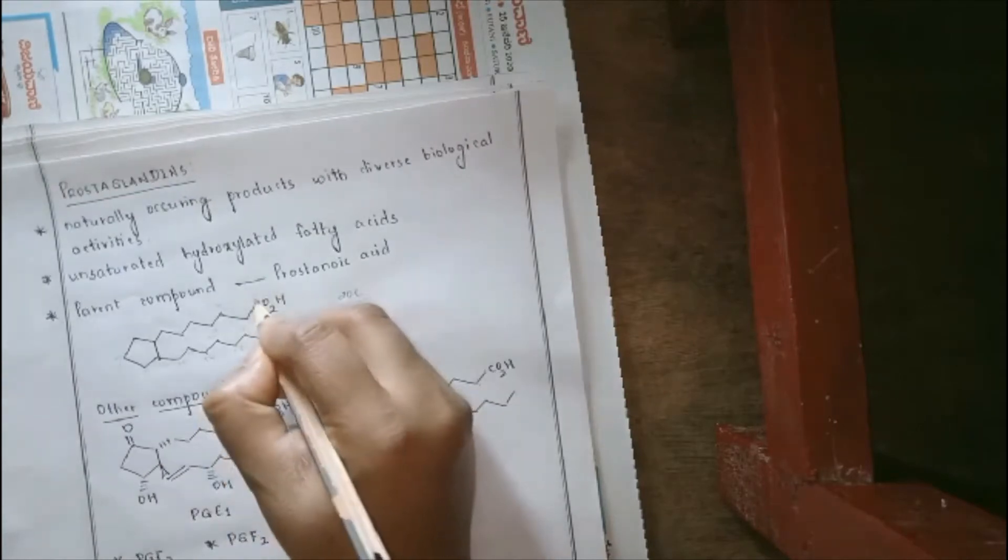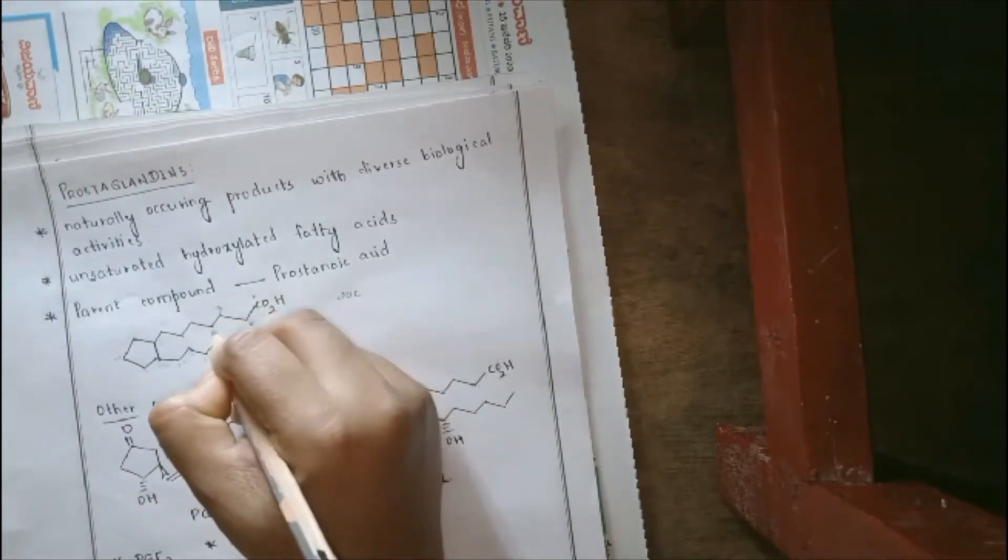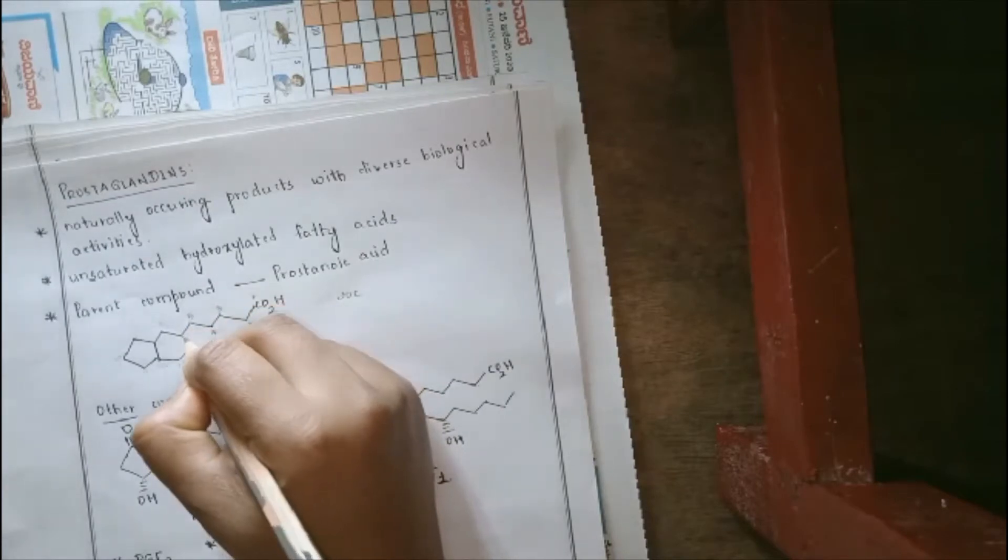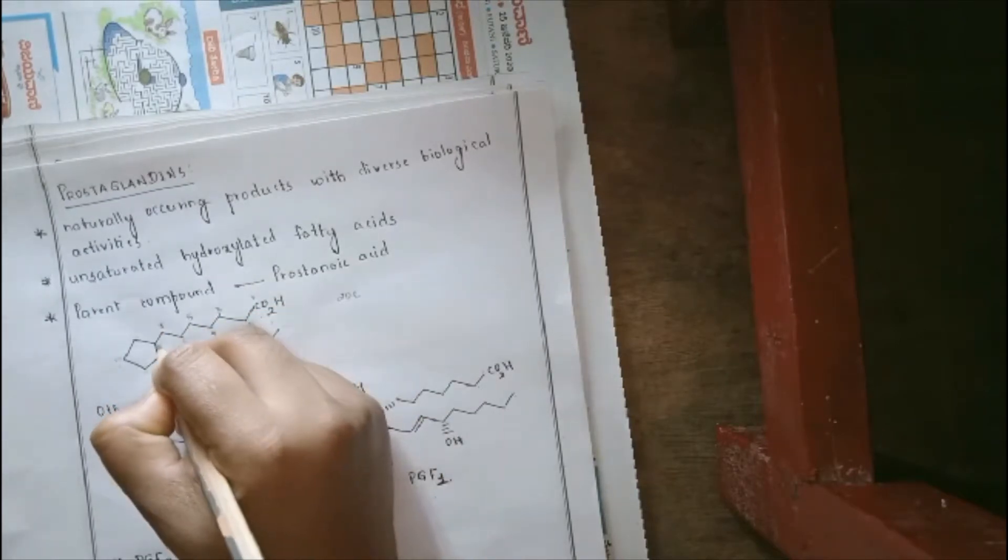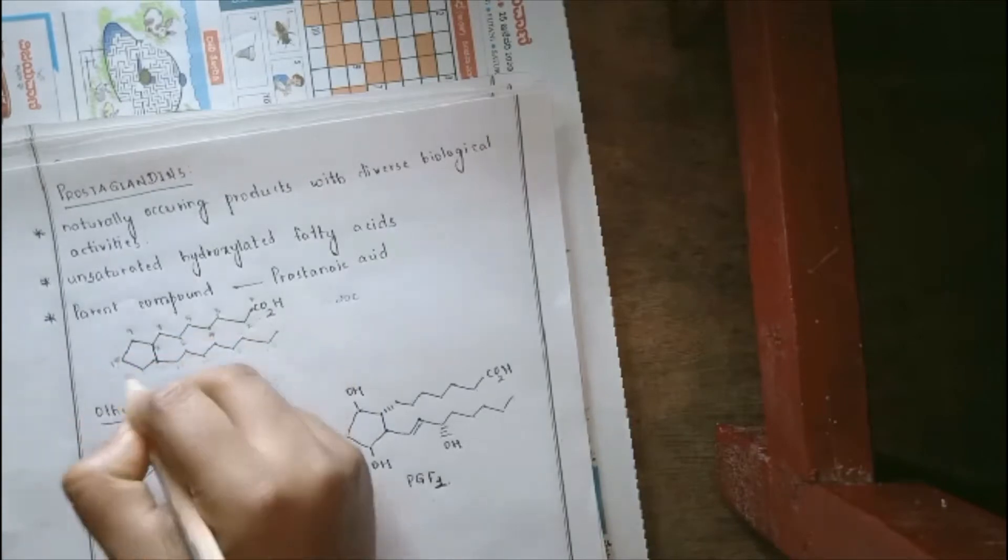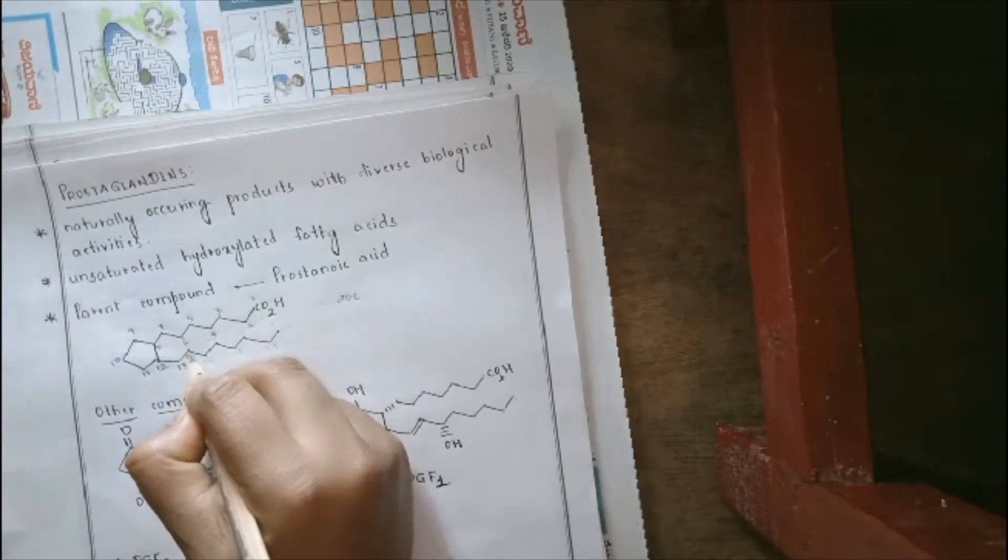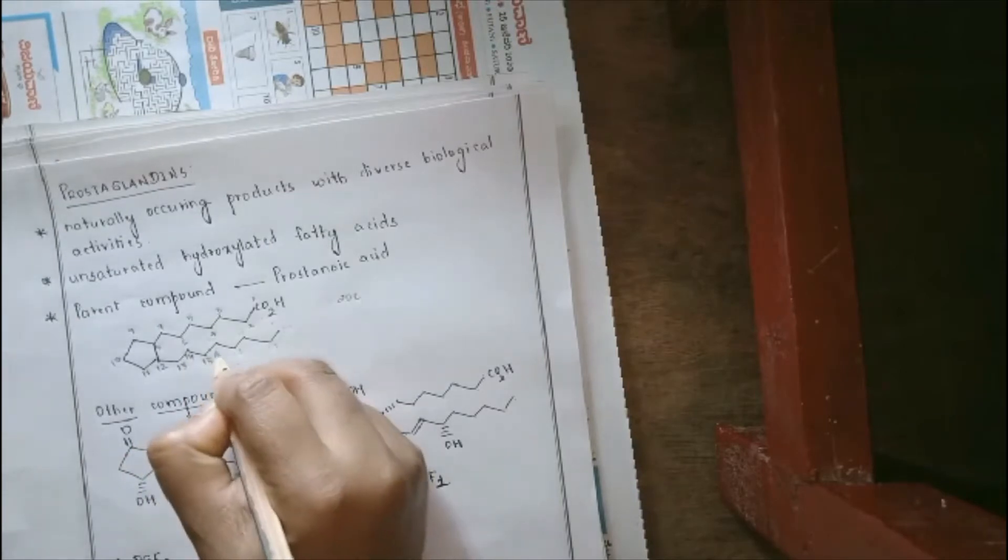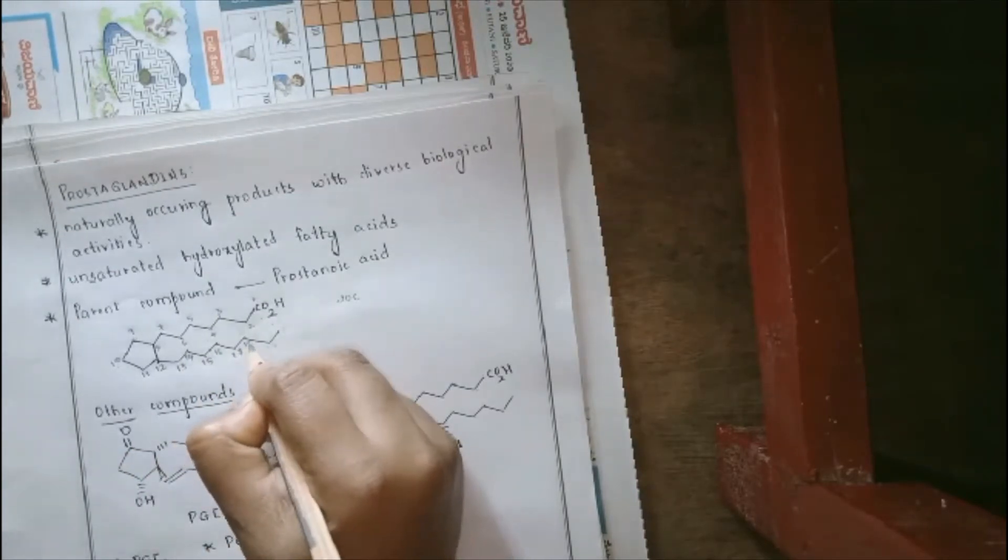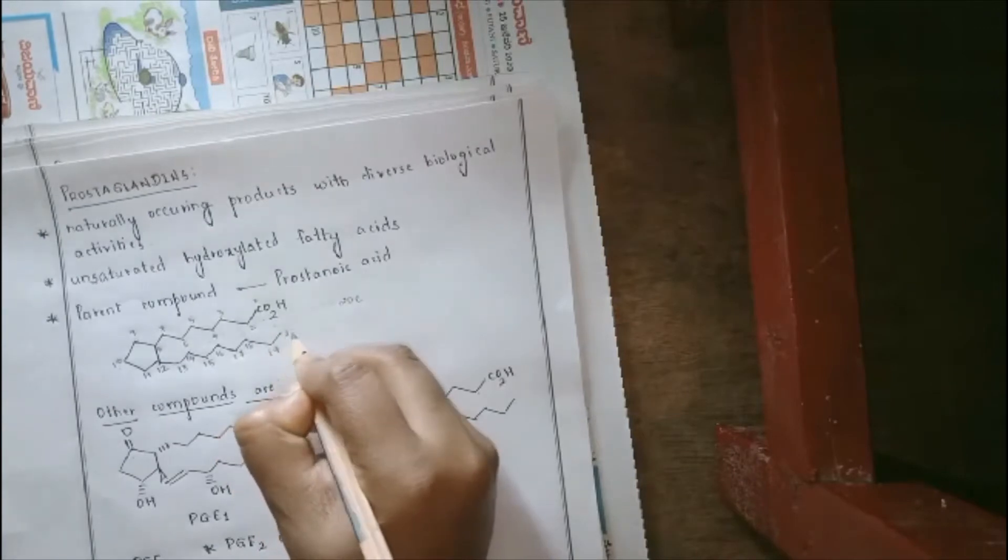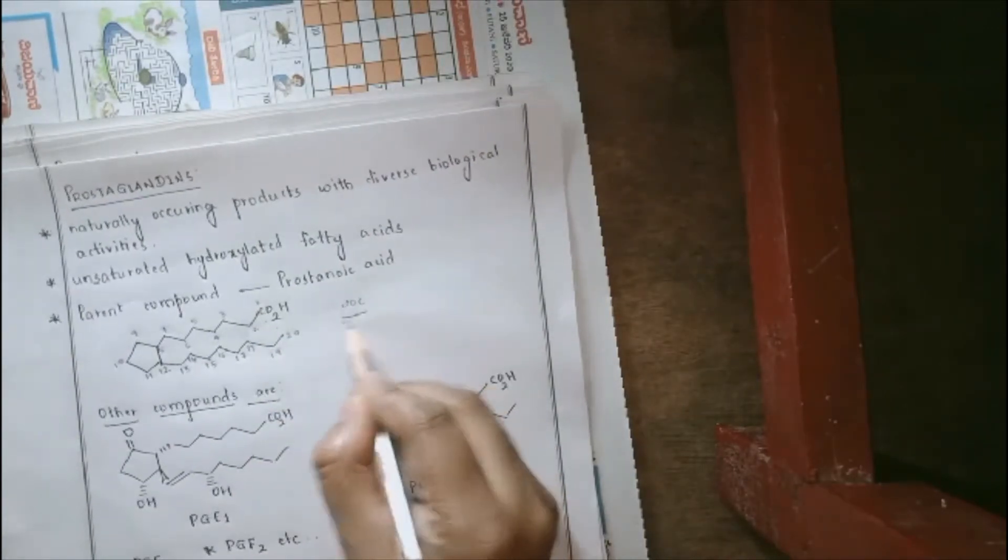So, let us do it once again: 1, 2, 3, 4, 5, 6, 7, 8, 9, 10, 11, 12, 13, 14, 15, 16, 17, 18, 19, and 20. So, totally, there will be 20 carbon atoms present. So, this would be the skeletal structure of a prostaglandin system.